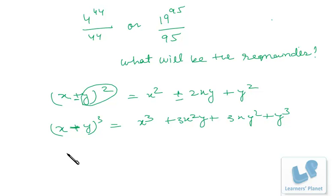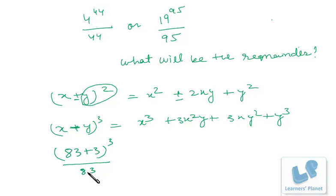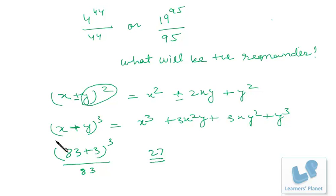For example, if you divide (83 + 3) whole cube by 83, the remainder will be 3 cubed, that is 27. So if a number is broken up into two parts and one of them is a factor of the divisor, the remainder is obtained from the other term.